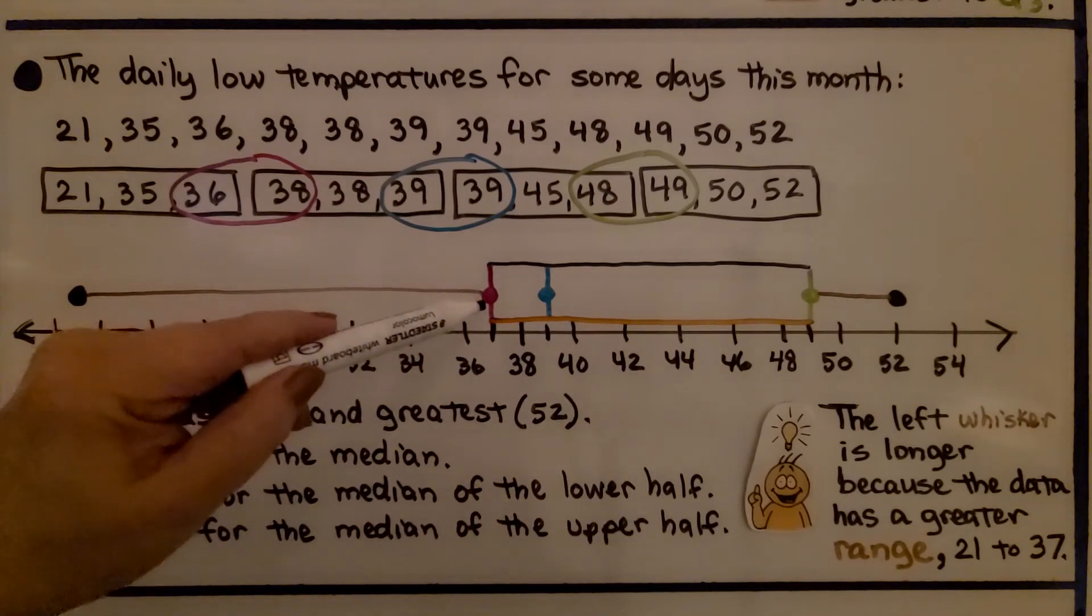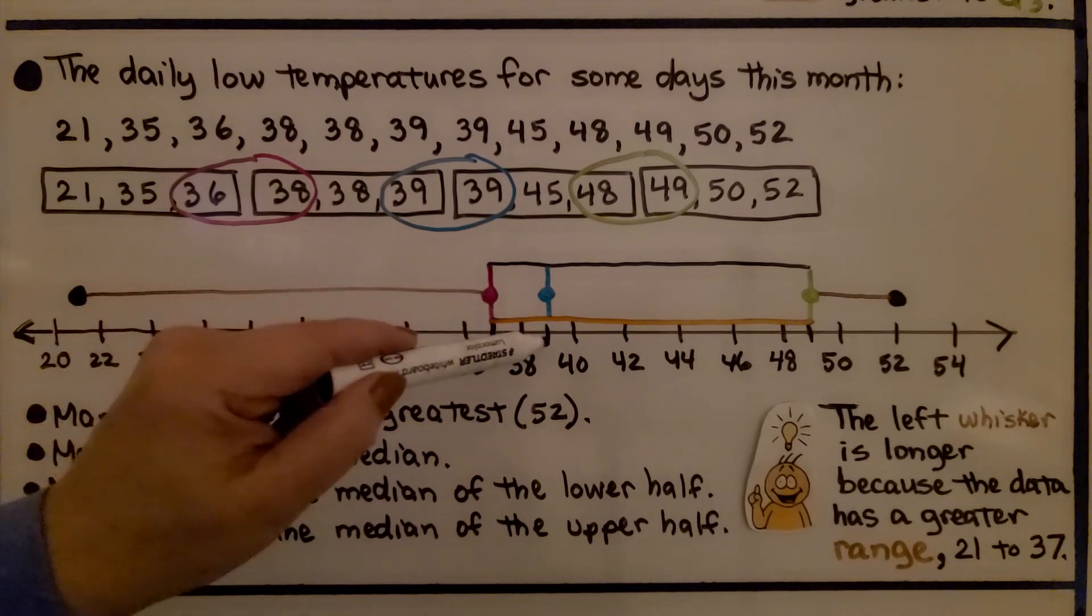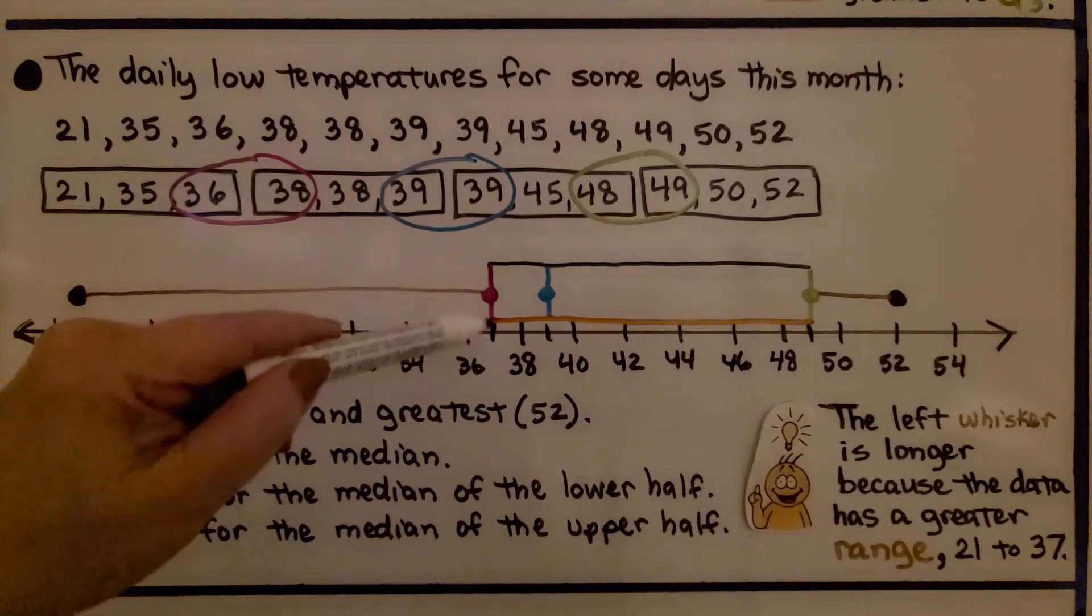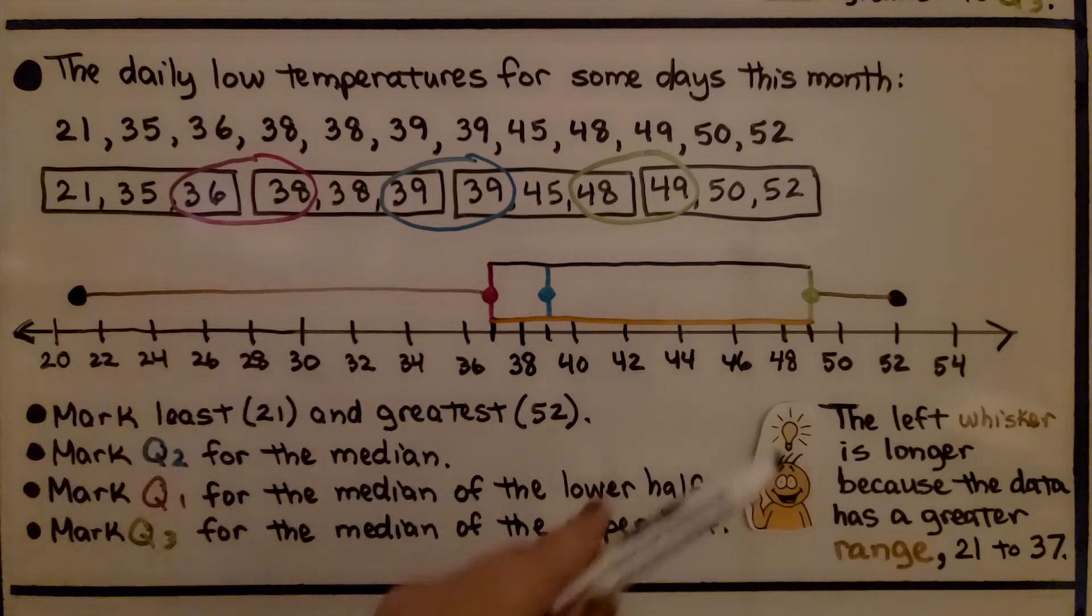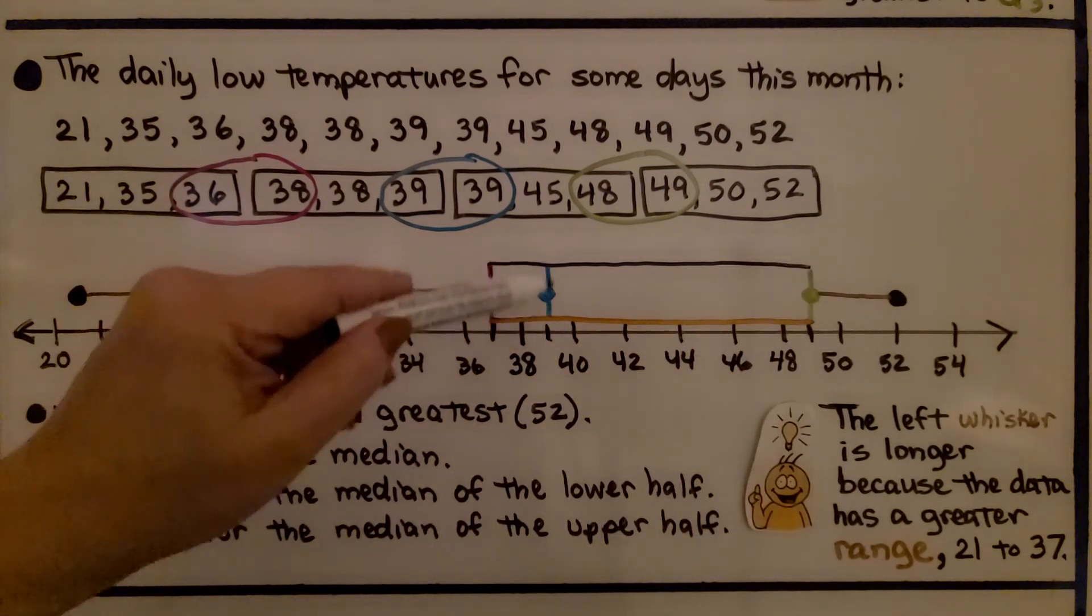From Q1 to Q2 is only 37 to 39. So remember that box plots show five key values. The least value, the greatest value, the lower quartile which is Q1. It shows the upper quartile which is Q3. And it shows the median which is Q2.